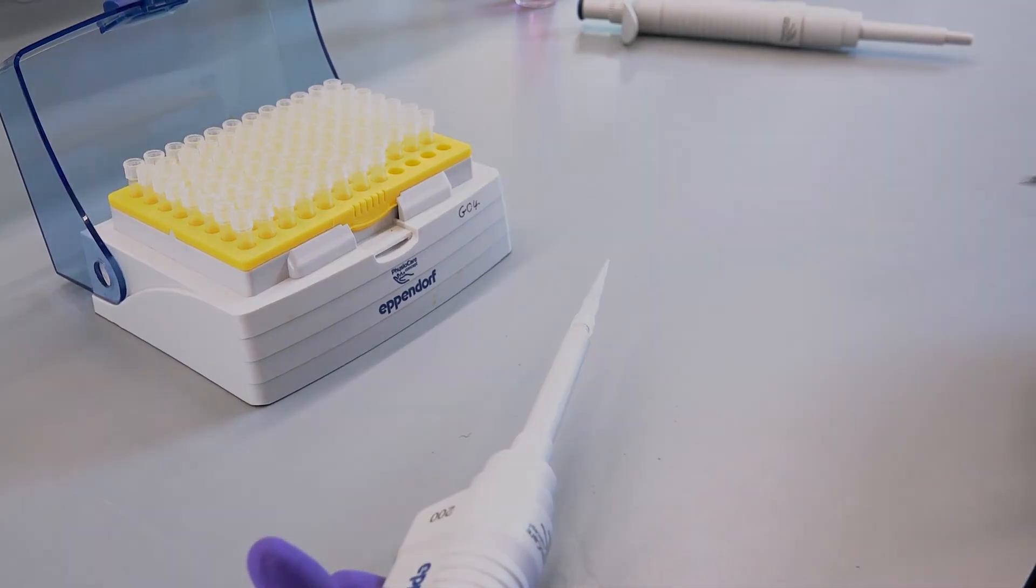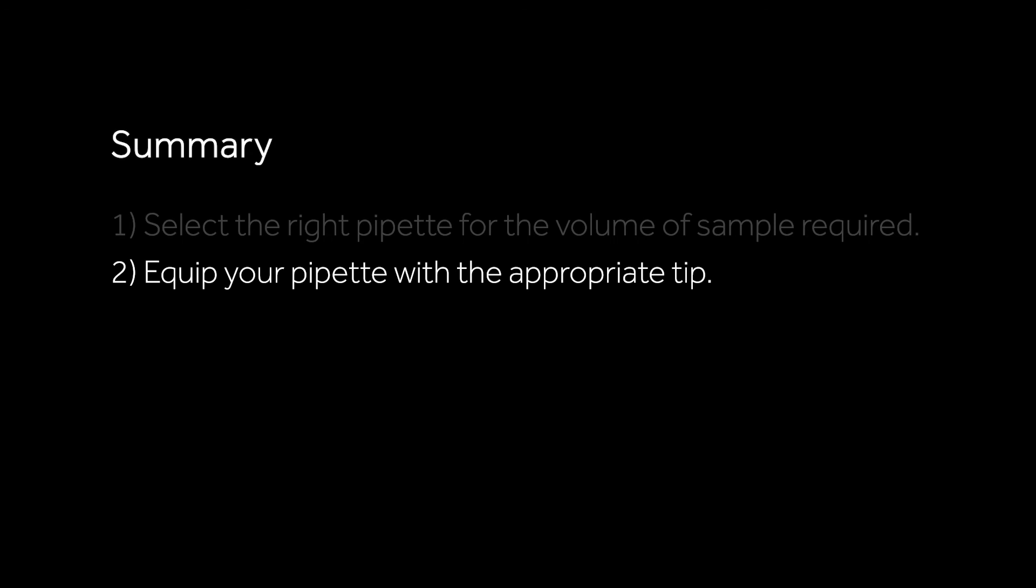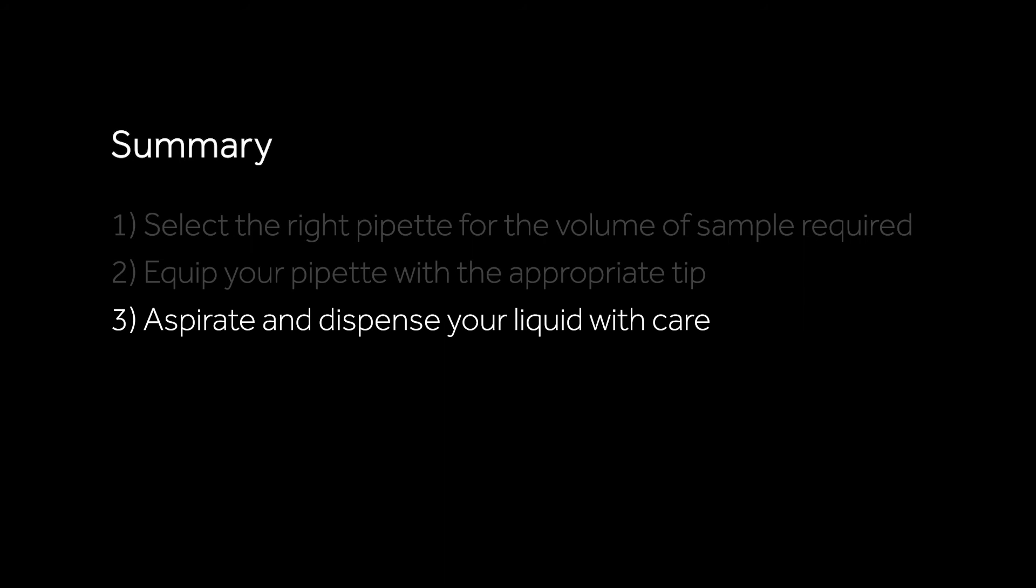To summarize: Step 1, select the pipette you want considering the volume of your sample. Step 2, equip your pipette with a tip that is appropriate for your pipette. Step 3, aspirate the liquid slowly by pushing the plunger down to the first stop to draw up your sample, then slowly dispense your sample by pushing the plunger down to the first stop and then apply more pressure to release any leftover sample.